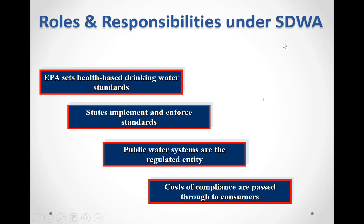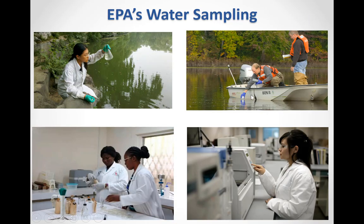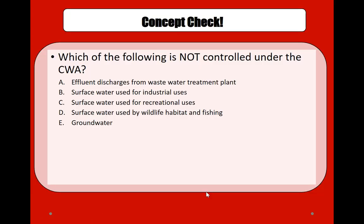Here you can see the roles and responsibilities under the Safe Drinking Water Act, and the various costs associated with ensuring the highest quality of water are eventually passed on to the consumers, who are the ultimate users. Here we can see EPA personnel testing and sampling water to ensure that water quality meets the required guidelines. Quick concept check: which of the following is not controlled under the CWA?